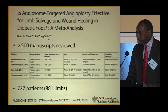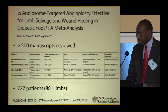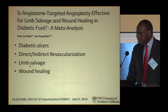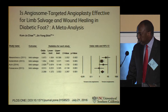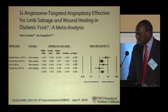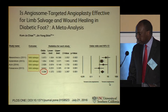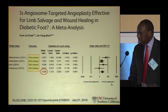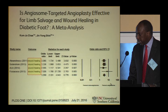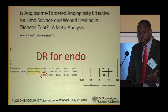A Chinese study reviewed over 500 manuscripts covering about 888 limbs and found four suitable studies for review. This analysis covered only patients who had angioplasty. For those patients, limb salvage showed a benefit if you went to direct revascularization of the angiosome, and wound healing also slightly favored angiosome revascularization — so this study said yes, direct is beneficial for patients having angioplasty.